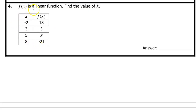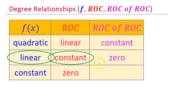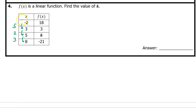Number 4. f of x is a linear function — find the value of k. Let's look at this chart again. On the previous problem, f of x was quadratic, so the rate of change of the rate of change was constant. On this problem, f of x is linear, so the rate of change itself will be constant. Let's record all of the changes in the input values. From negative 2 to 3, that's an increase of 5. From 3 to 5, that's an increase of 2. And from 5 to 8, that's an increase of 3.